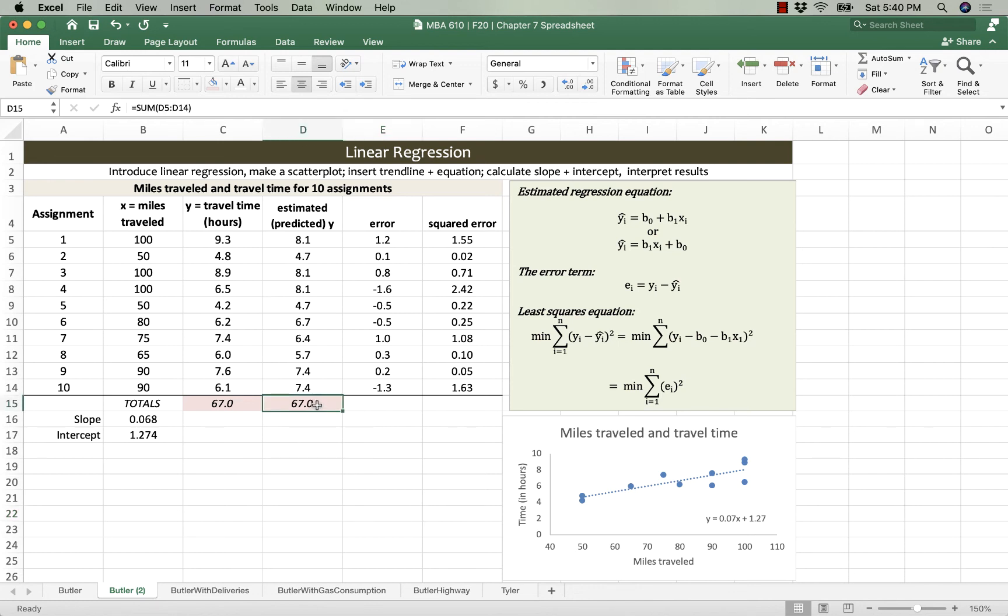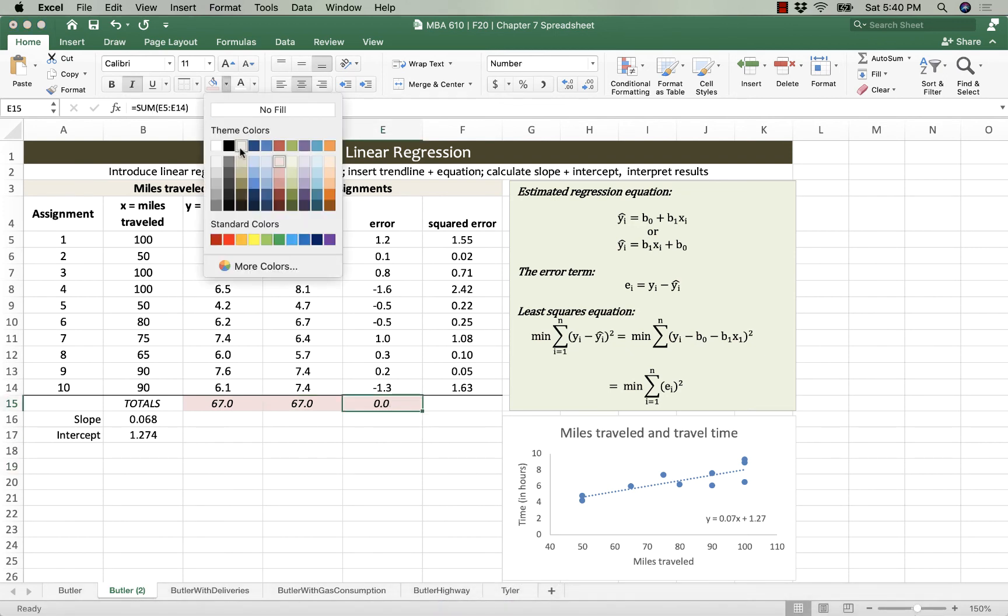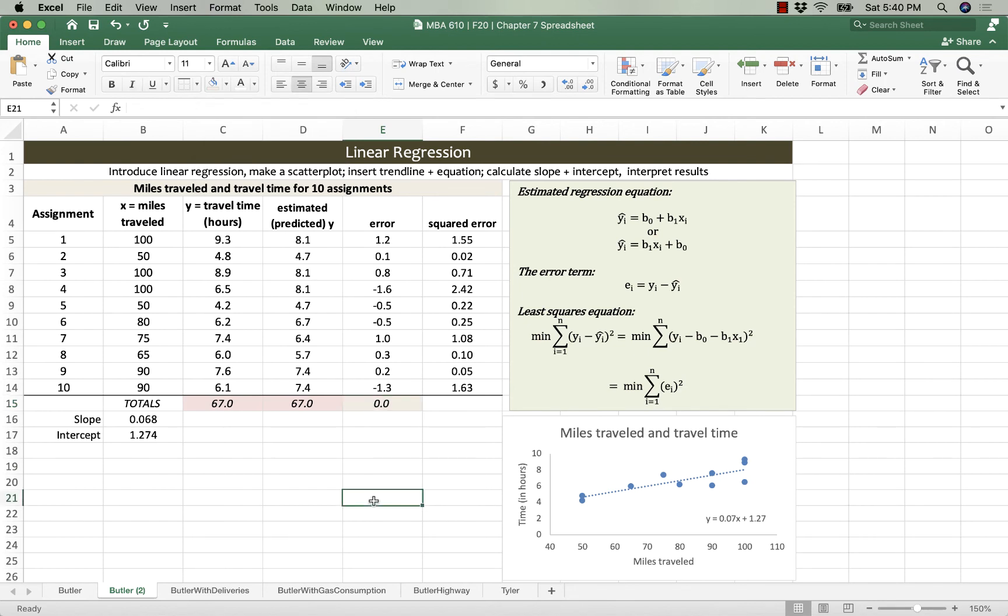The second truism here is that the error is going to be zero. All the positive errors and the negative errors counteract each other. So when least squares regression has done its job, the sum of errors is zero.